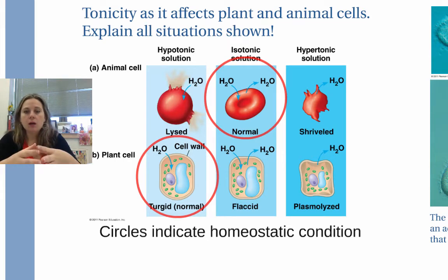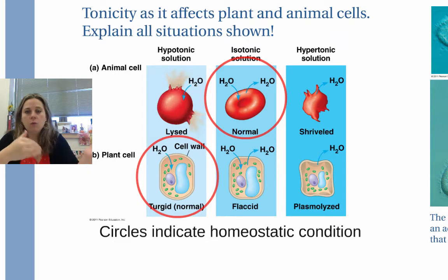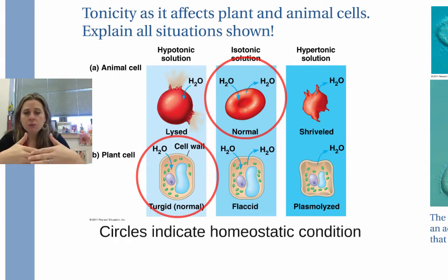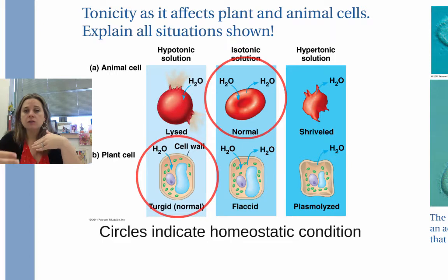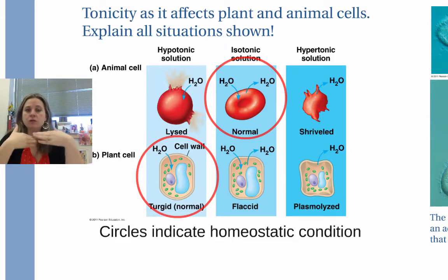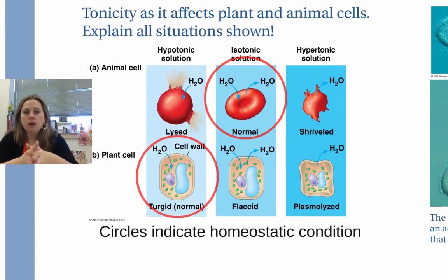The circles here indicate what is normal for a cell. In an animal cell we want things to be isotonic, which means the concentrations outside the cell are equal to the concentrations inside the cell, and there is no net directional movement of water — things are at equilibrium.